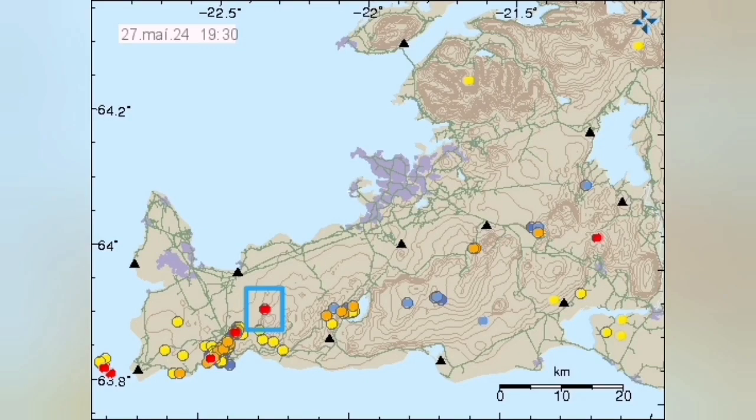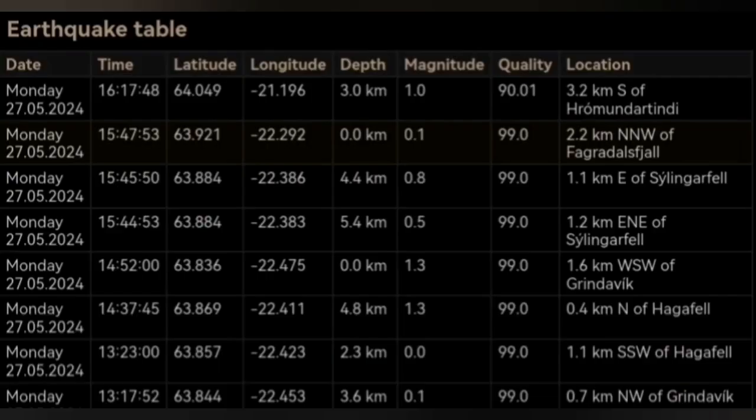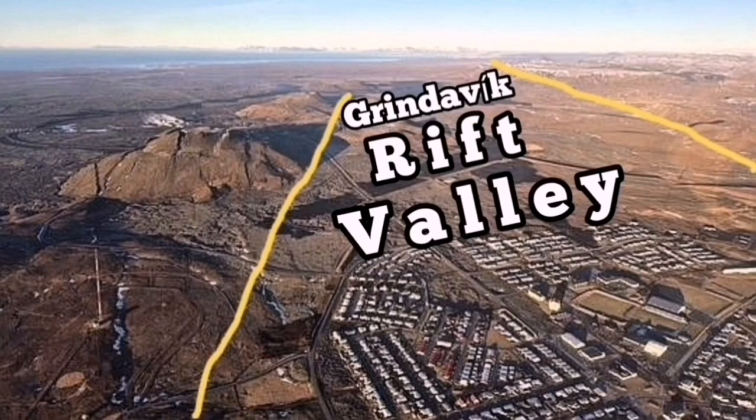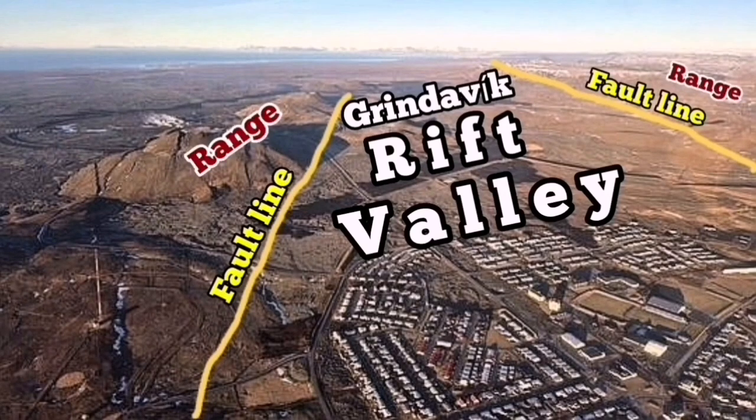And when we look at the depth of it, this is at the zero depth, 2.2 kilometers north of the Fagradalsfjall. That's practically exactly on the plate boundary we see it. It was a small one. This is the Grindavik Rift Valley.